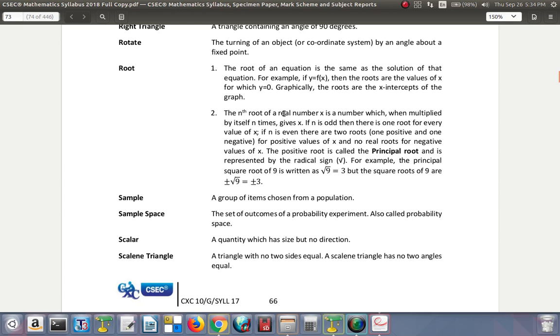The nth root of a real number x is a number which, when multiplied by itself n times, gives x. If n is odd, then there is one root for every value of x. If n is even, then there are two roots, one positive and one negative, for positive values of x and no real numbers for negative values of x.